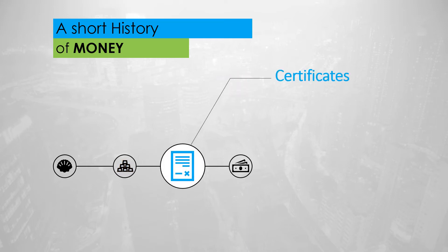This is how the first certificates appeared. Gold was held in a secure vault against a fee and the owner received a piece of paper in exchange where the exact quantity was stated. The gold could be retrieved at any time against that piece of paper. While paper was easier to carry or store than gold, there was still a problem: dividing the paper was not that trivial.